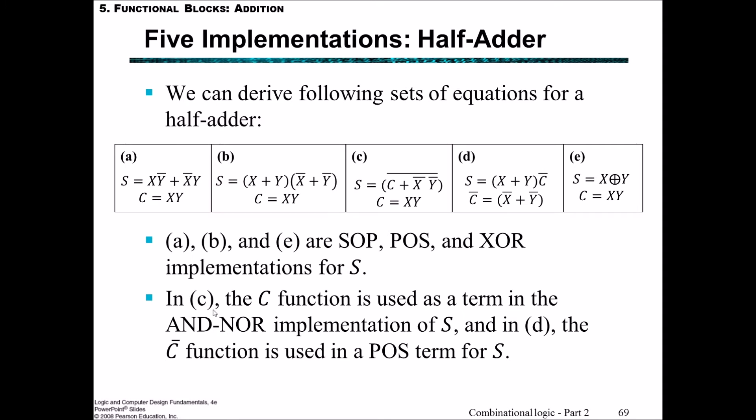We can derive the following sets of equations for the half-adder. These equations have been brought forward from the previous page, and the various ways of writing this show there are various ways to implement it. For example, (a) is sum of products, (b) is product of sums, and (e) is XOR. In (c), we've used the C term in order to get the result for S, whereas for (a), (b), and (e), we haven't included that C term but rearranged the equation.